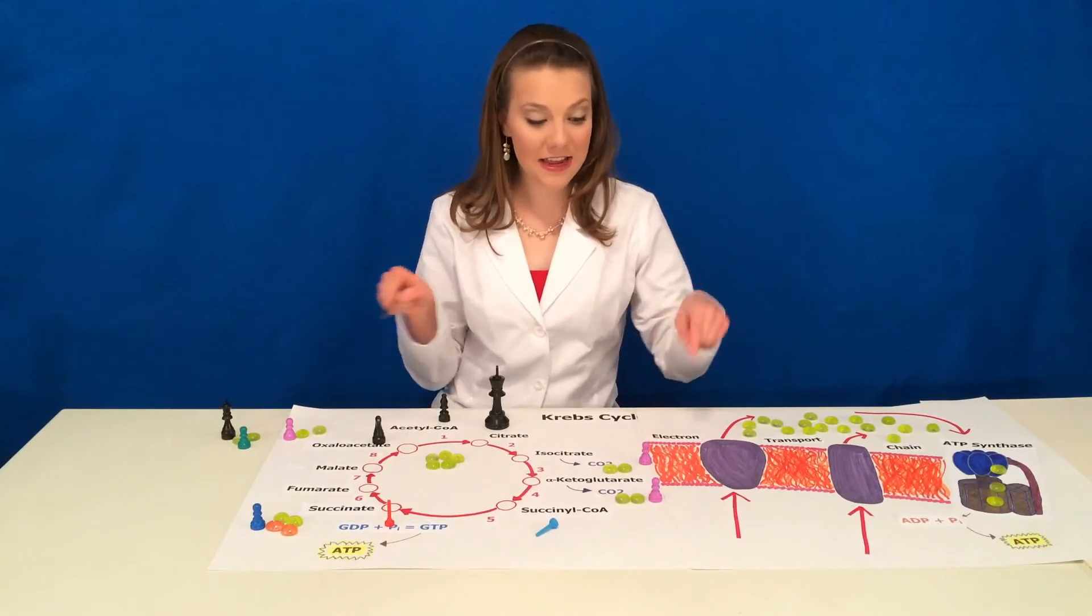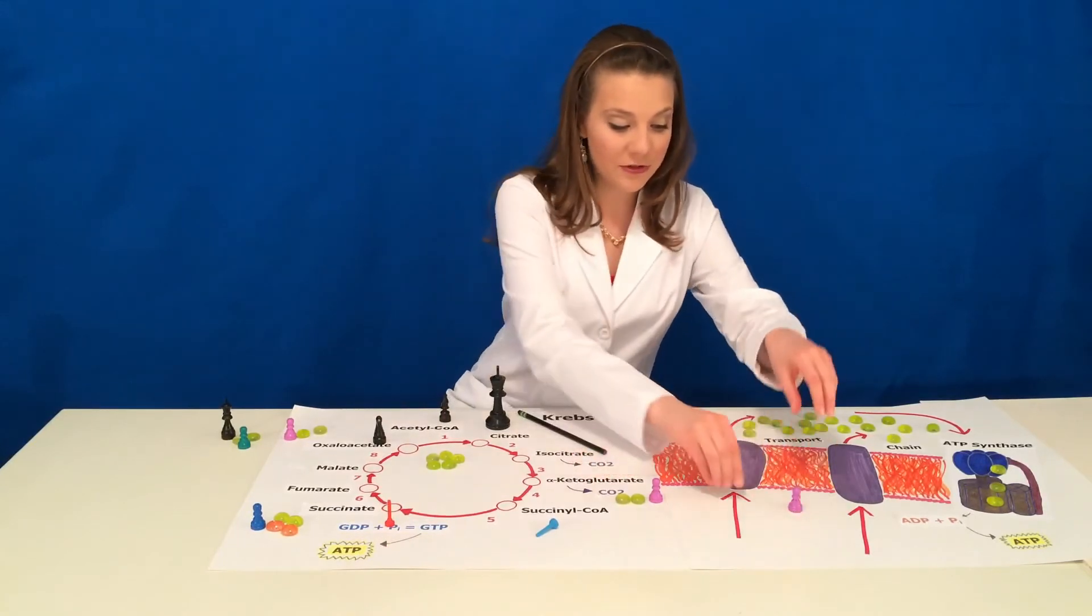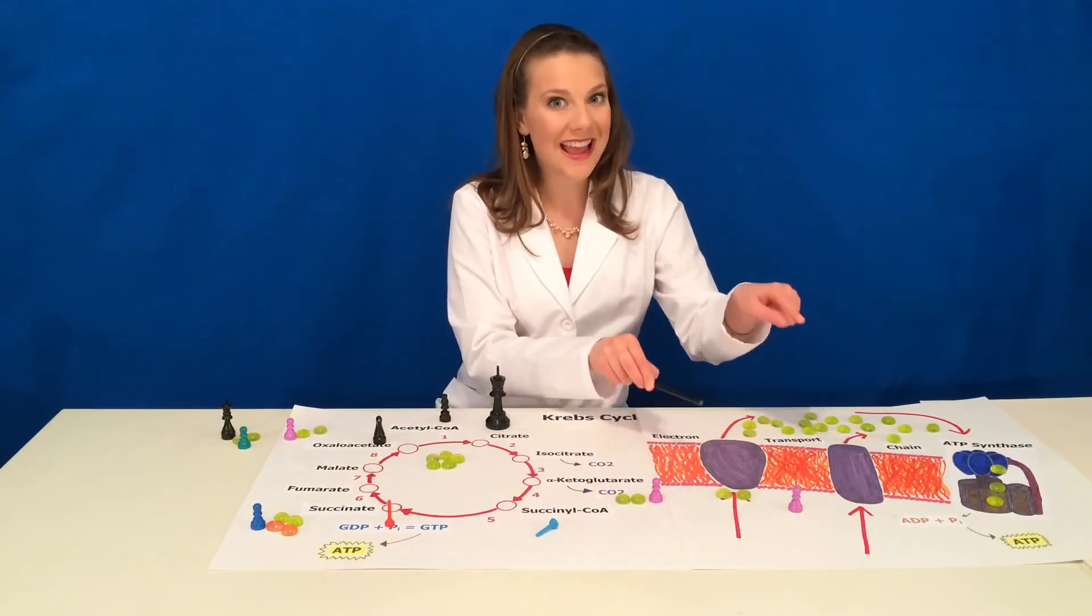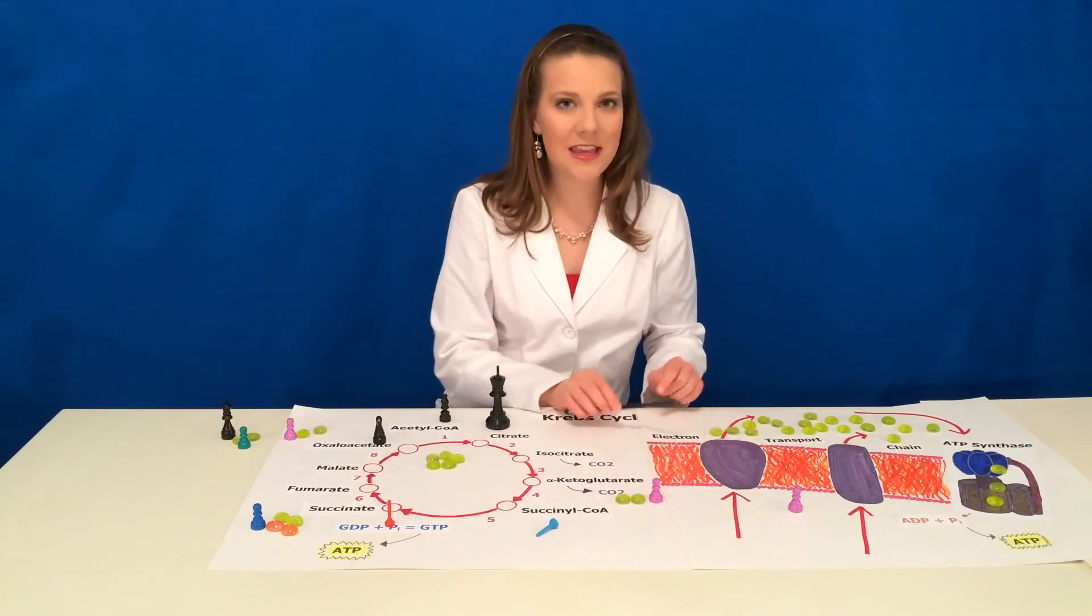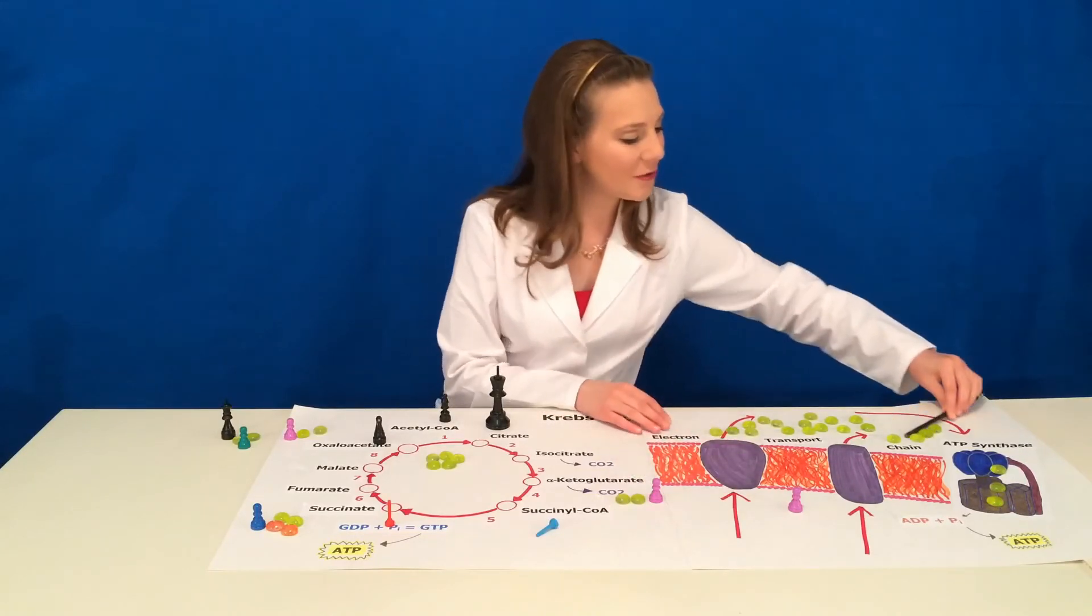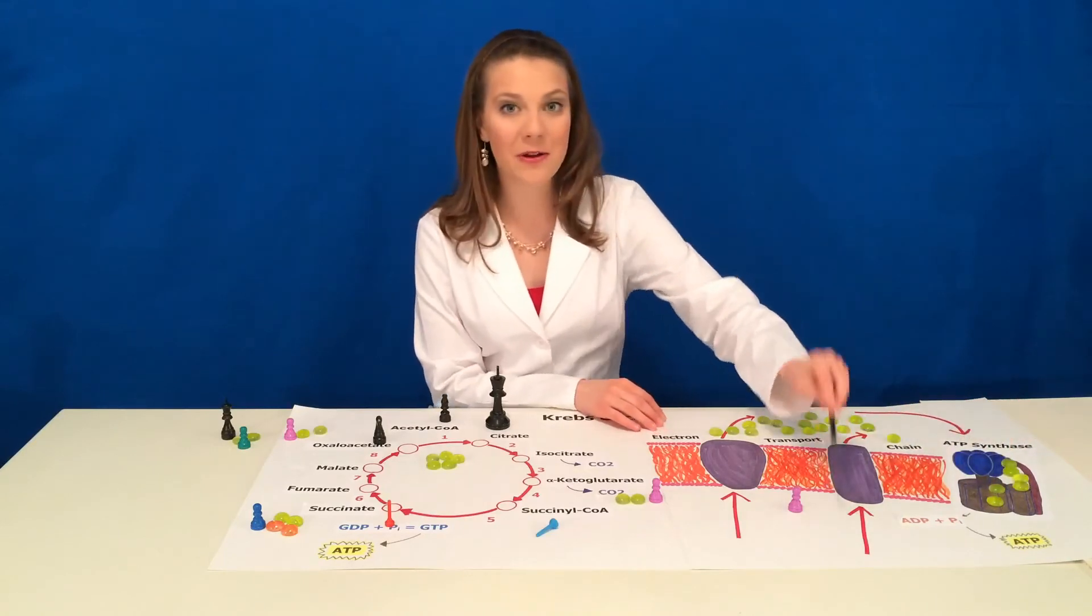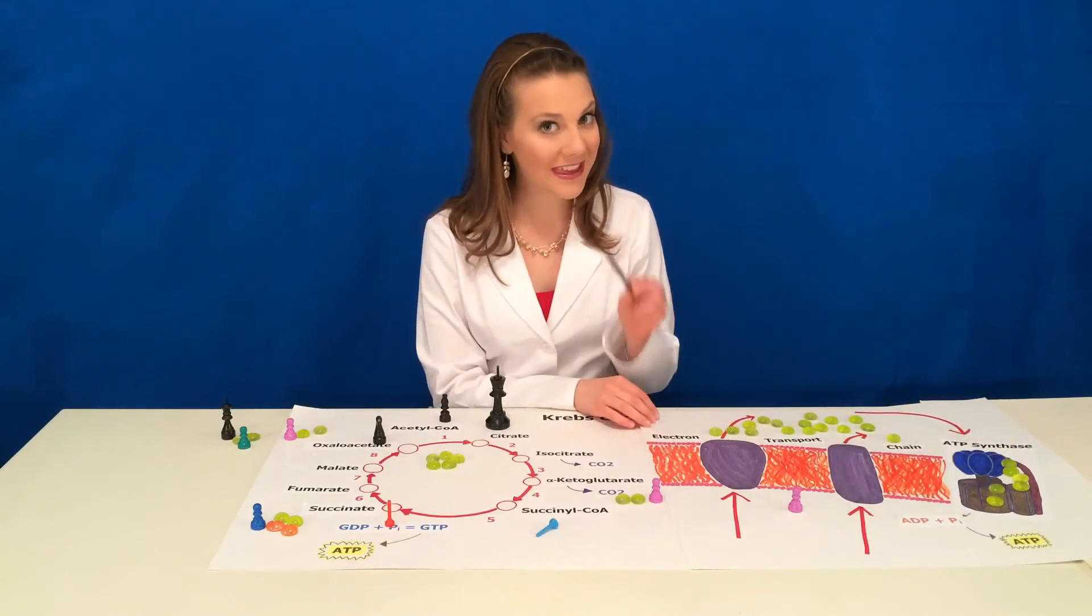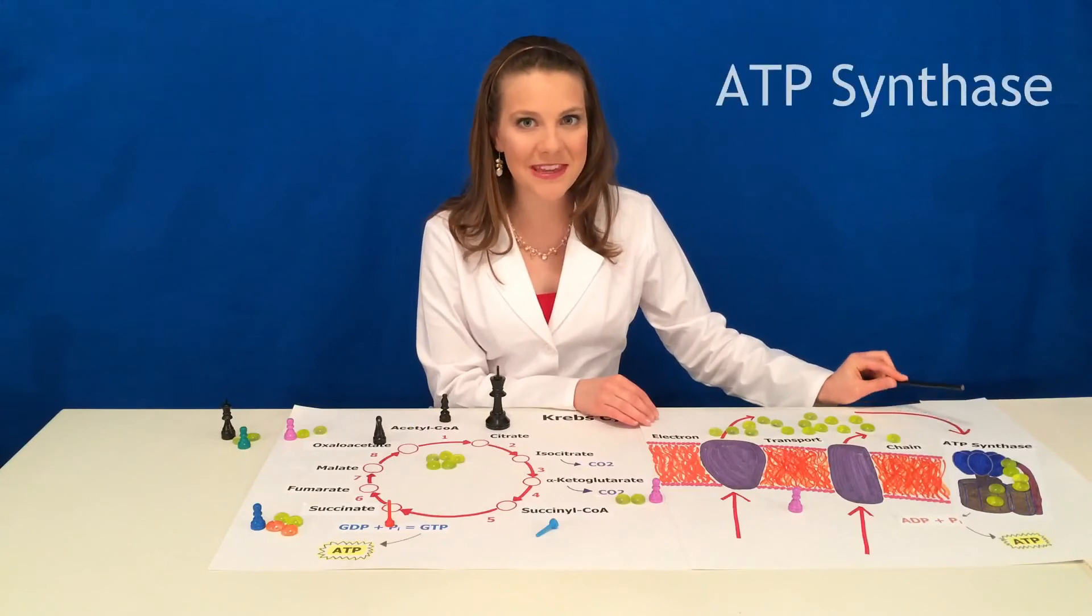FAD and NAD take their electrons over to the electron transport chain. These proteins then actively pump the electrons into the intermembrane space. Because of the high electron concentration, the electrons naturally flow back into the mitochondrial matrix. But the only way they can get there is through the ATP synthase.